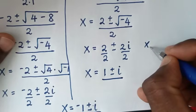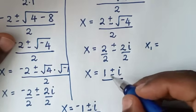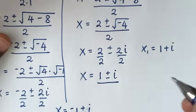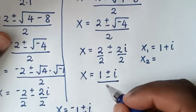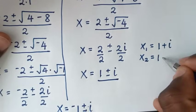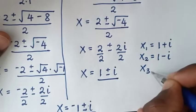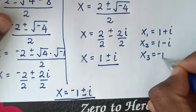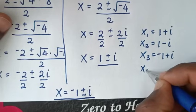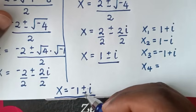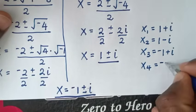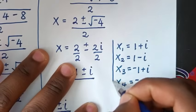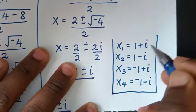So our conclusion: the first value of x is 1 + i, which is a complex solution. The second value of x is 1 − i. The third value of x is −1 + i. And the fourth value of x is −1 − i. So we have 4 complex solutions to this problem.